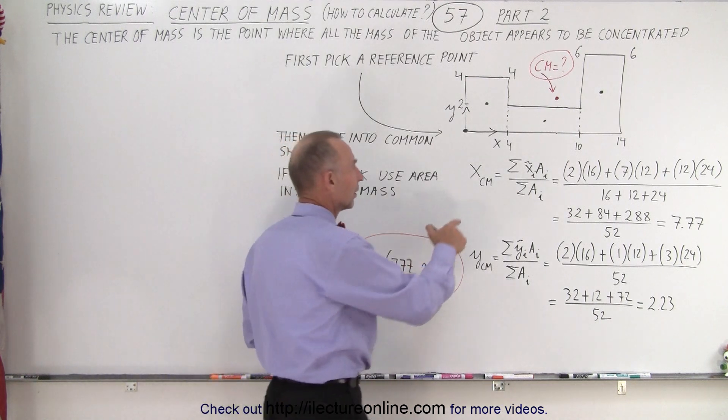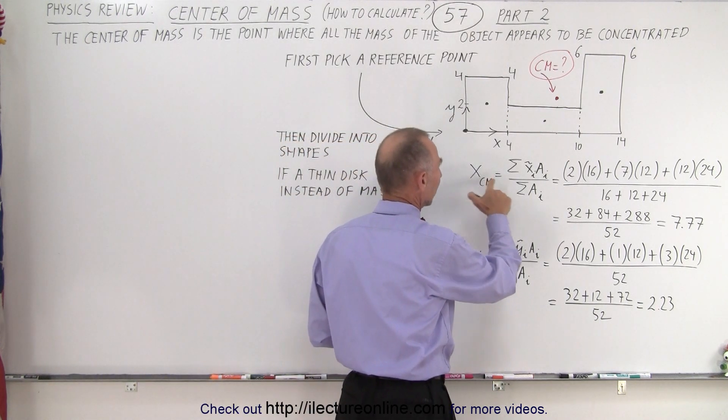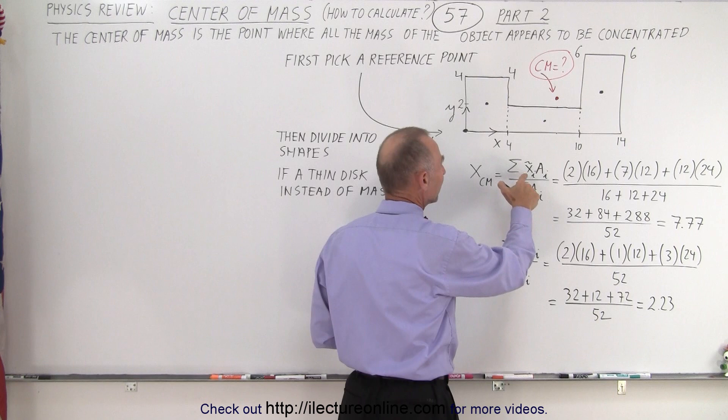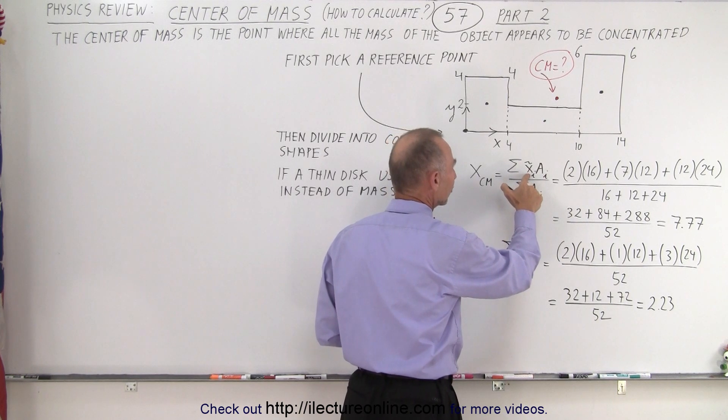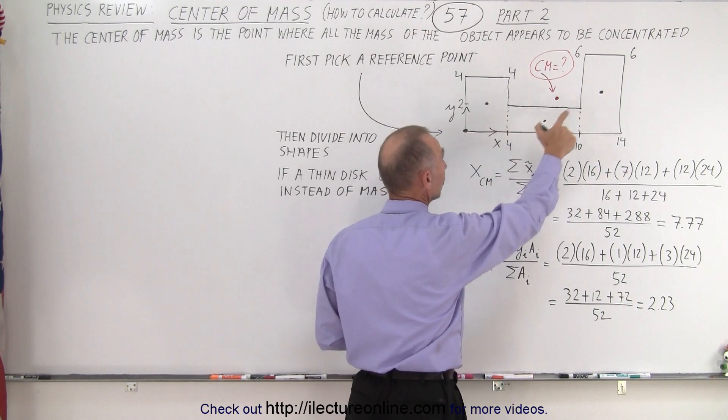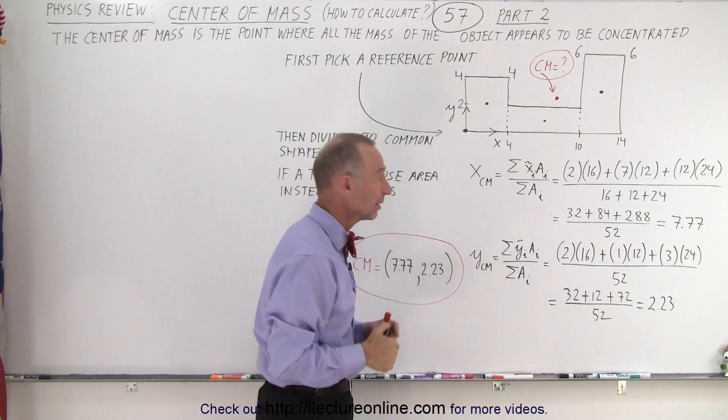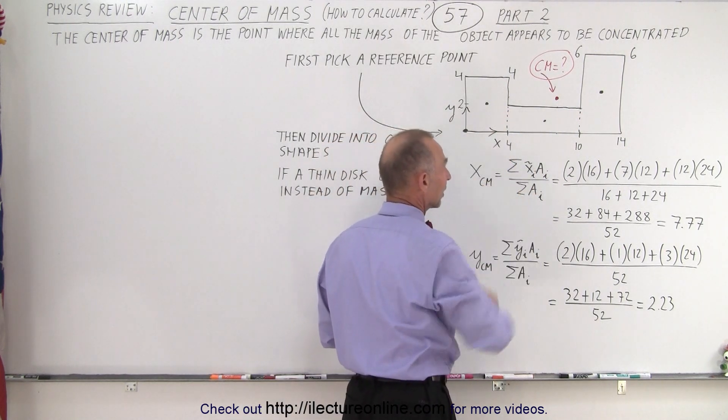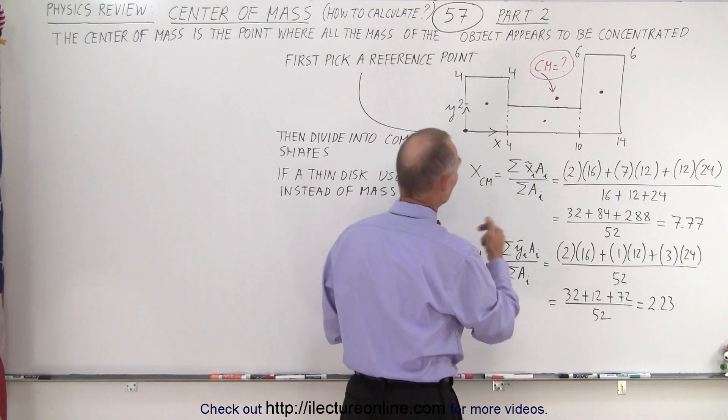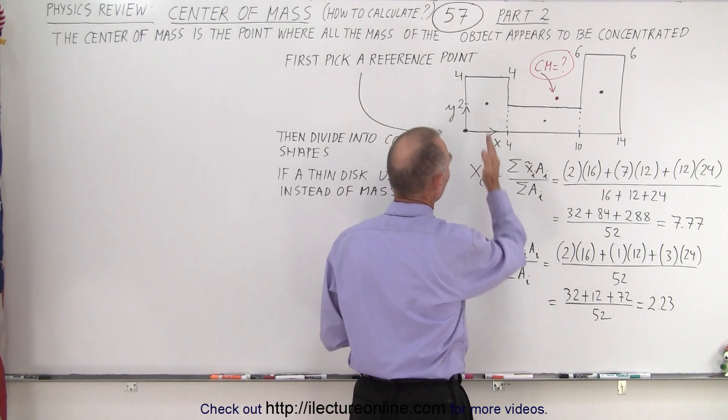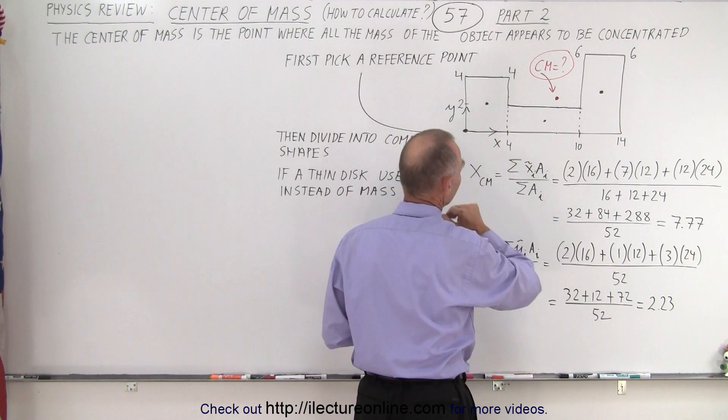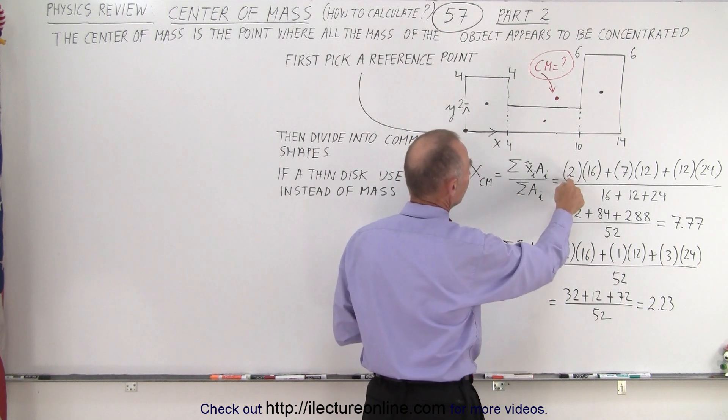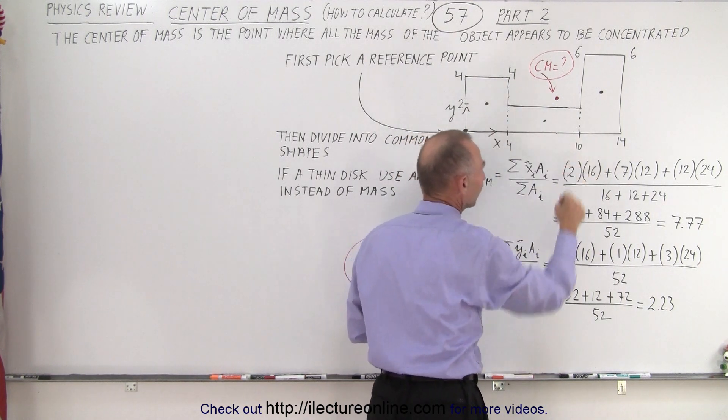So then we find the center of mass in the x-direction as being equal to the sum of the center of mass in the x-direction of each of the three objects, subdivided objects, times the area of each of those divided by the sum of all the areas. So in this case, notice that in the x-direction, the center of mass would be halfway between there and there because it's a nice square. So it would be 2 times the area which is 4 by 4 is 16.